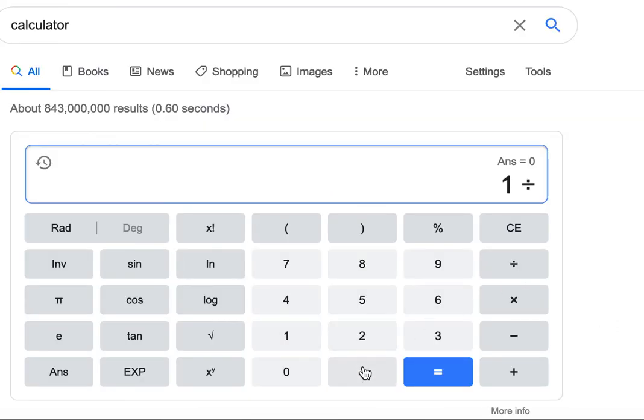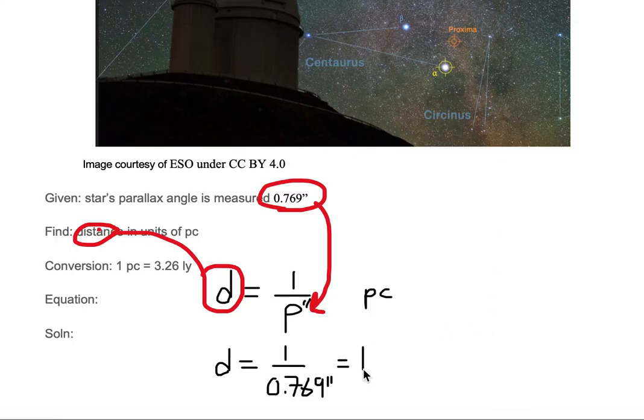We need to put 1 divided by 0.769, and we hit equal. Now notice that 769 is three digits, so our answer we want in three digits: 1.30. We go to the fourth digit and notice it's a 0, so it's less than five, so the third digit does not rev up. The answer is 1.30. So we put that in on our document, 1.30, and the units are parsecs.